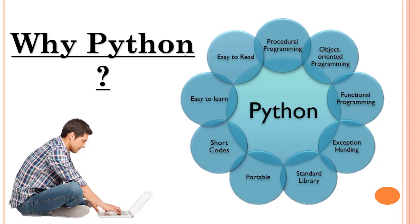A code that is somewhere around 200 lines in C++ can be coded in just 10 to 20 lines in Python — that's how short it can become. It is also portable and embeddable. Python supports object-oriented programming, where each and everything is taken as an object. We have functional programming, exception handling — if there's an error we can always raise an exception. We also have a lot of standard libraries so we don't have to code everything by ourselves.